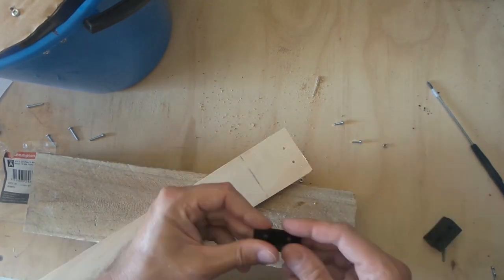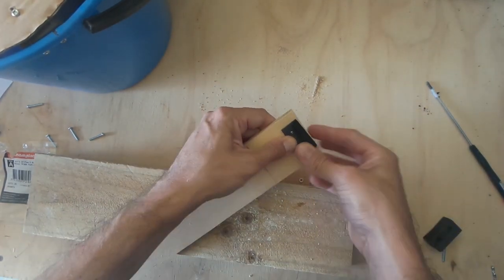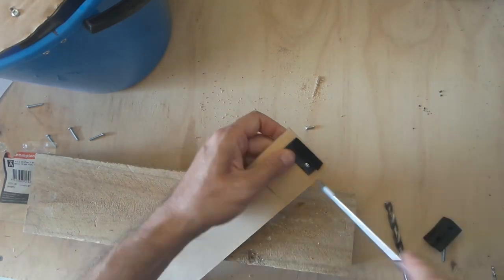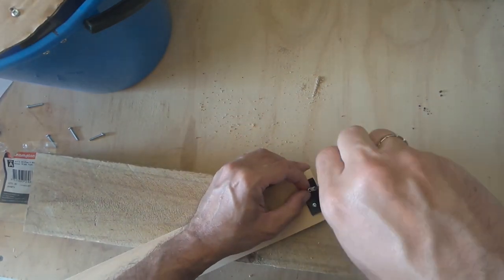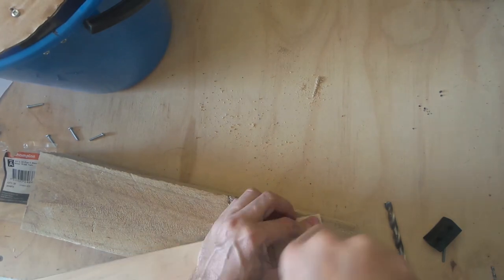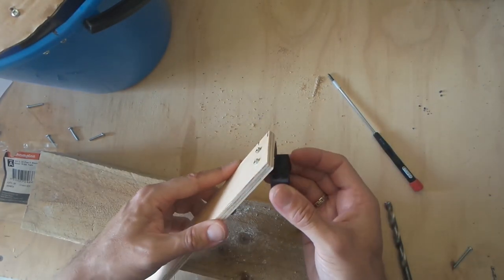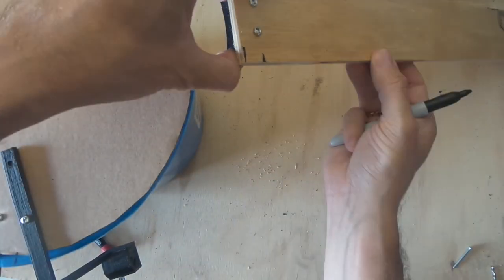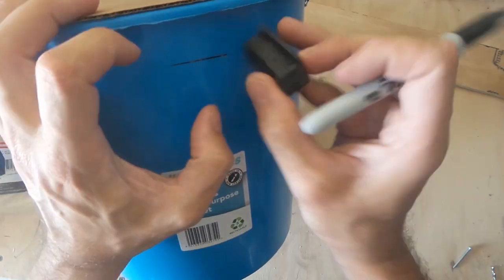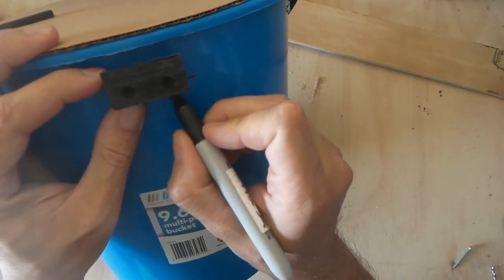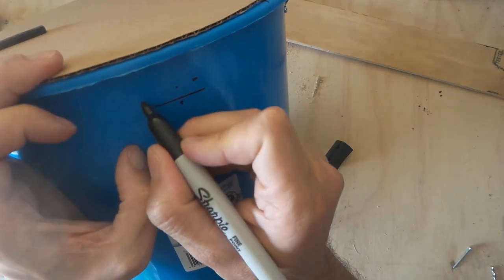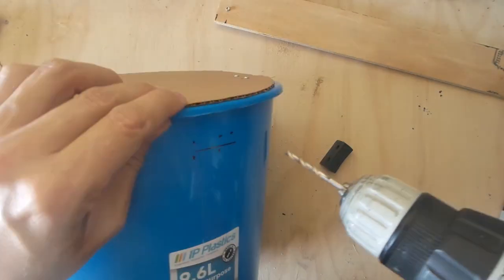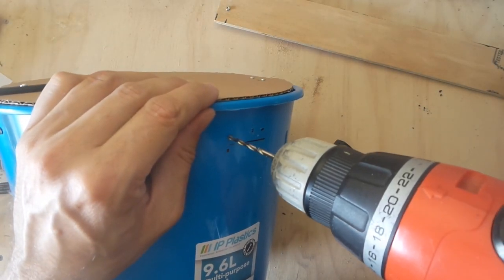Next is the ramp where the mice can come up, again two 3D printed parts, M3 bolts and nuts. Marking the holes, drill them out and mount.